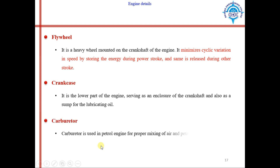The next component is the carburetor, used in petrol engines for proper mixing of air and petrol. In petrol engines, air and petrol are mixed first, then this mixture is sent into the cylinder, and then it is ignited. The device used to form a correct mixture of air and petrol is called the carburetor, and it is used only in petrol engines.